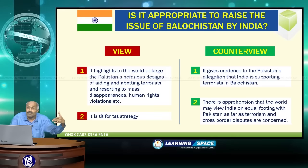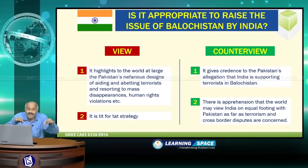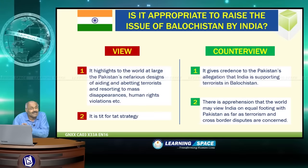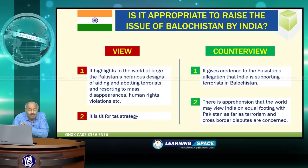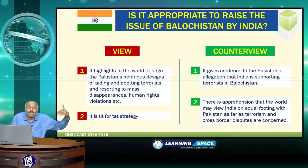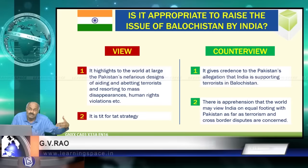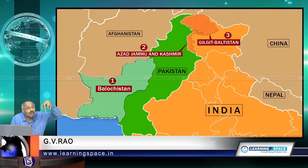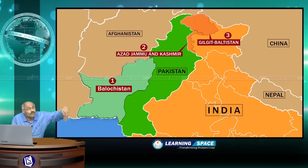A second apprehension is that the world may view India on equal footing with Pakistan. So far, most countries of the world have not believed Pakistan. By making this counter allegation, India and Pakistan may now be viewed on the same platform as far as terrorism and cross-border disputes are concerned. This is the counter view expressed by experts. As things stand today, Azad Jammu Kashmir and Gilgit-Baltistan are supposed to be sovereign parts of Indian territory, and India has nothing to do with Balochistan.